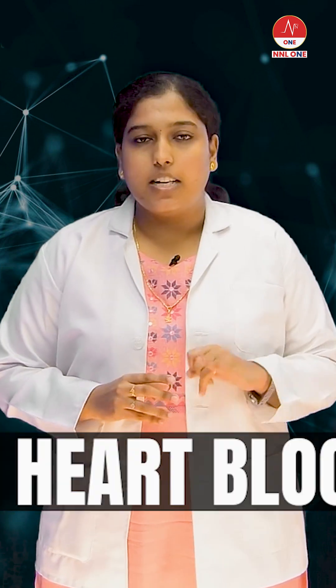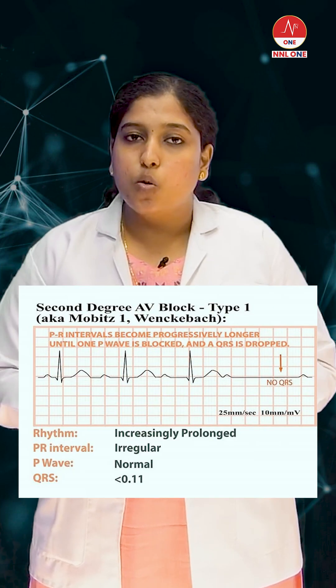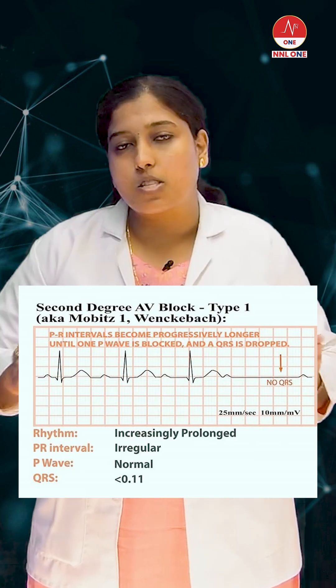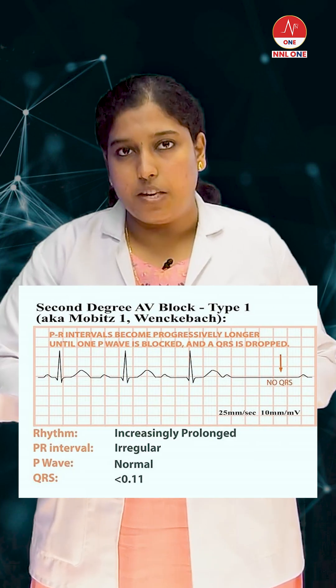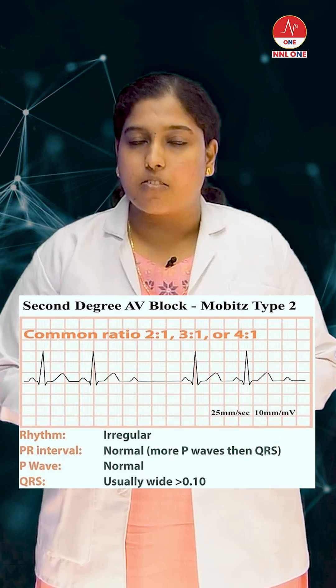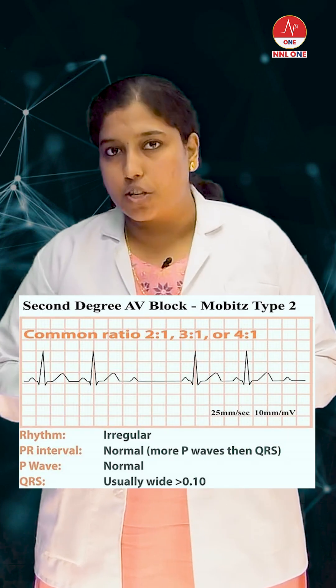Next we have the second degree heart block. In second degree you have type 1 and type 2. In type 1 heart block you will have progressive prolongation of the PR interval. In second degree type 2 you will have a regular PR interval but a drop in the QRS complex.